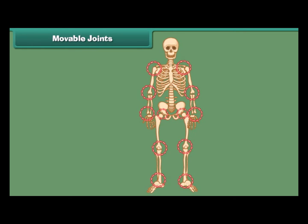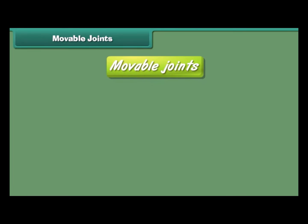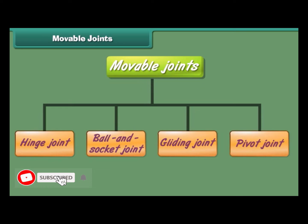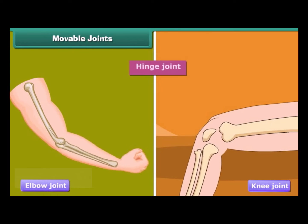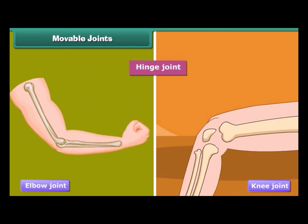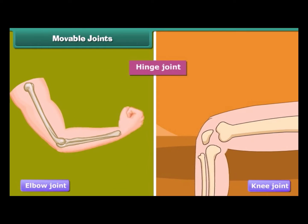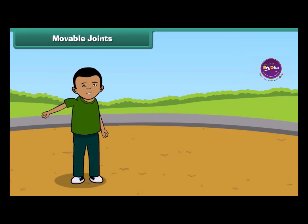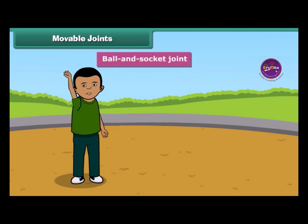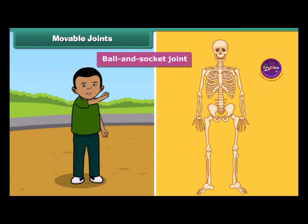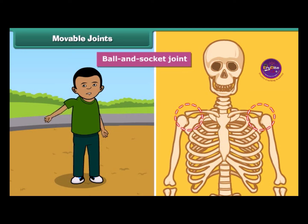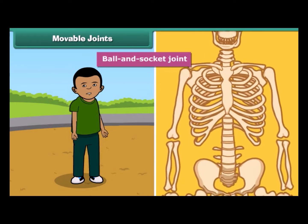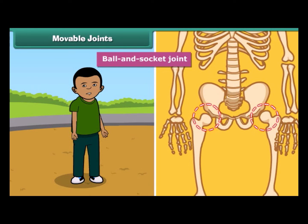Most movable joints allow free movement of the body parts, whereas in some joints only a little movement is possible. Moveable joints are grouped into four types on the basis of movement. Hinge joints are joints which can be bent in only one direction — for example, the elbow joint and the knee joint. Ball and socket joints join the bones to make circular movement possible — for example, the upper arm bone fitted to the shoulder, and the thigh bone fitted to the hip bone.